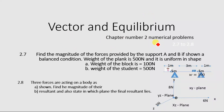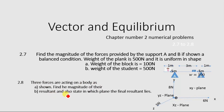Vectors and Equilibrium, Chapter 2 Numerical Solution. This video includes numericals 2.7 and 2.8 from the second chapter. We will solve these two numericals. The first one is: find the magnitude of the forces provided by the supports A and B in a balanced condition. The second one is: three forces are acting on a body — find the magnitude of their resultant. Let's begin with the first one.